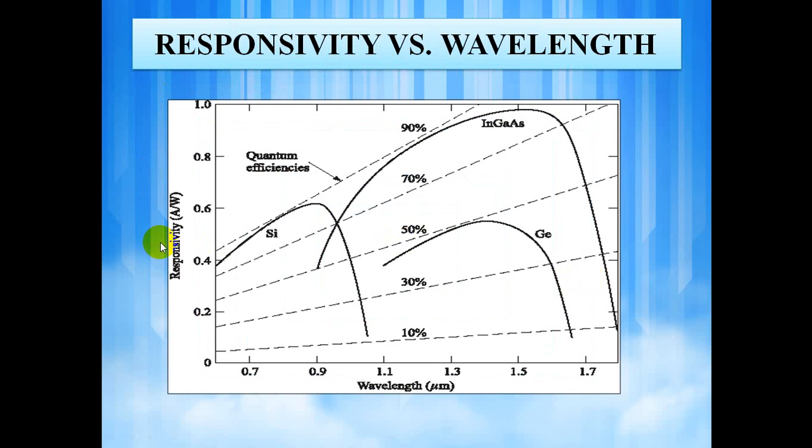Now we shall see the dependency of responsivity on wavelength. As the wavelength of the incident photon becomes larger, the energy of the photon becomes smaller than the required for exciting the electron from valence band to conduction band. As a result, the responsivity falls to zero at the particular wavelength. This wavelength above which the photons are no more absorbed by the semiconductor is known as the longer cut-off wavelength of a photodiode. Here we can see for photodiode of different materials, the cut-off wavelengths are different. For silicon, it is around 1.1 micrometer. For germanium, it is around 1.7 micrometer. And for indium gallium arsenide, it is around 1.9 micrometer.